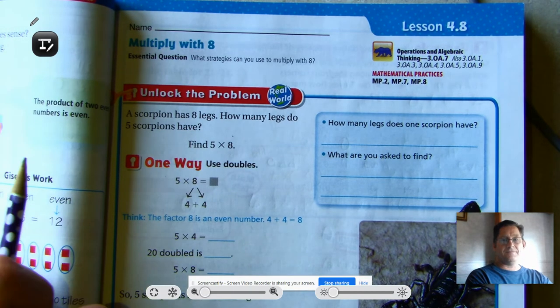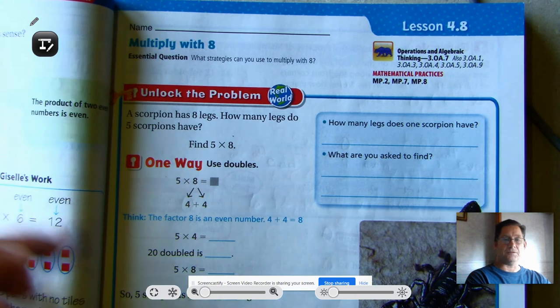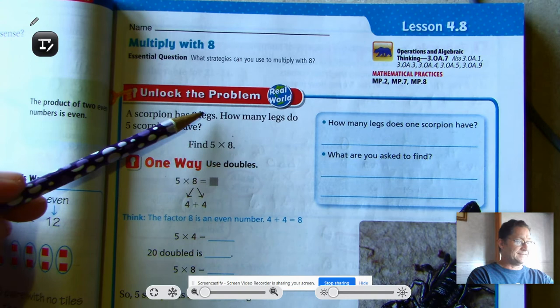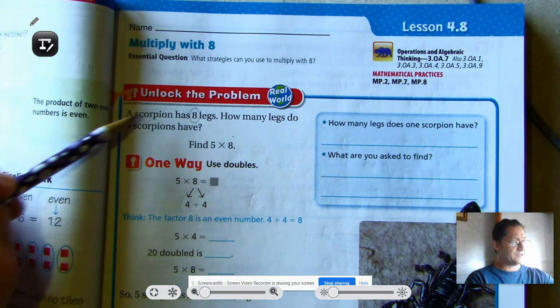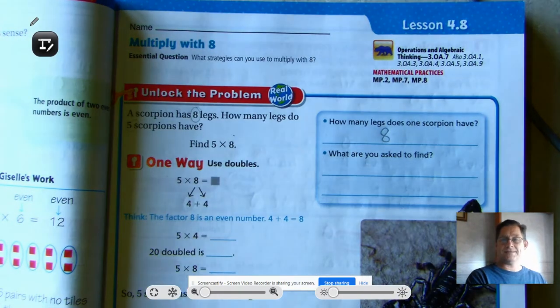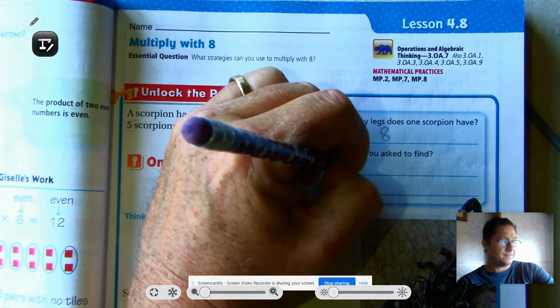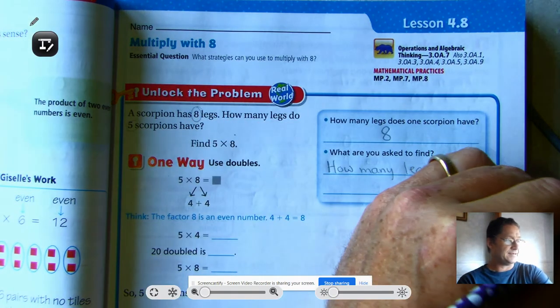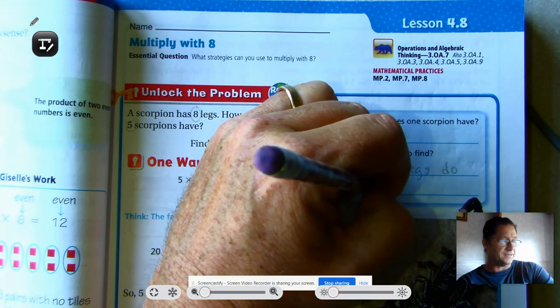But what if I don't know my 8s? I need to have some type of way of solving this problem, these type of problems. So a scorpion has 8 legs, how many legs do 5 scorpions have? So we have 8 legs on a scorpion and we have 5 scorpions. A scorpion has 8 legs, what are we asked to find? How many legs do 5 scorpions have?